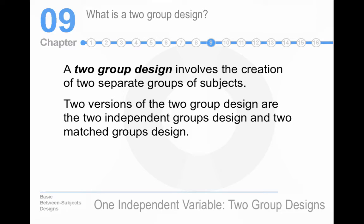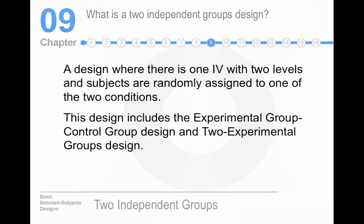What is a two group design? The creation of two separate groups of people. This is the simplest type of design because it only uses one independent variable and has two groups. So, it's easy to understand, easy to do. There's only one independent variable with two levels, and that could be an experimental group control group or a two experimental group design.